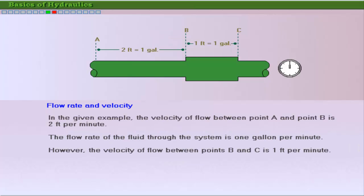In the given example, the distance between point A and point B is 2 feet. As the fluid moves from point A to point B in 1 minute, the velocity is 2 feet per minute. Also, 1 gallon of fluid passes through point A in 1 minute. Hence, the flow rate is 1 gallon per minute.